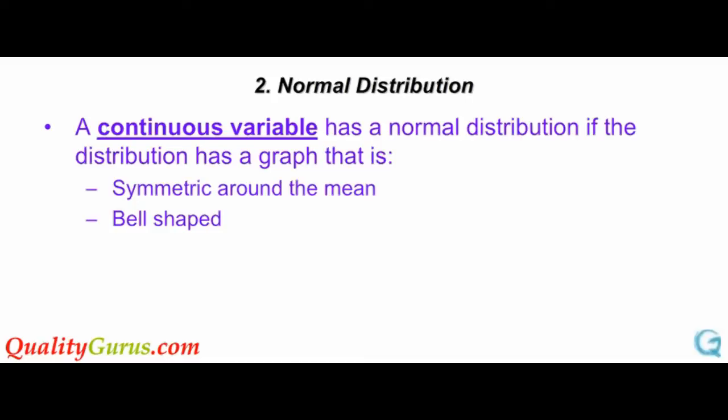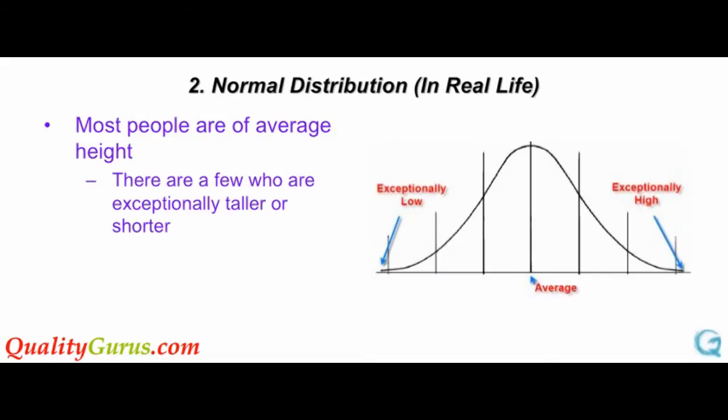If you draw the outcome on the x-axis and the probability of the outcome on the y-axis, you get the probability distribution. In case of Normal Distribution, this distribution curve is bell-shaped and symmetric around the mean. Nature follows the rule of average. Most of the people have average height, weight, or IQ, but there are a few exceptions.